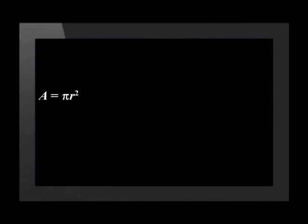This means that the land the farmer is using to plant his crops has a radius of 255 meters. We can use this to calculate the area of the farm. The formula for this is A equals pi times radius squared. We substitute 255 for the radius. The total area of the land is equal to 204,282 meters squared.